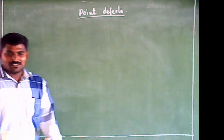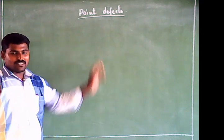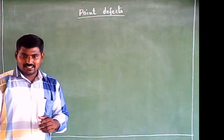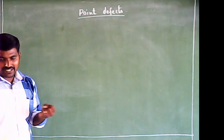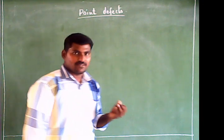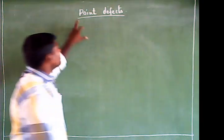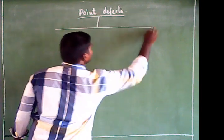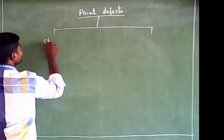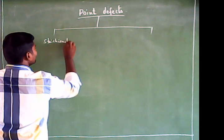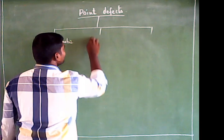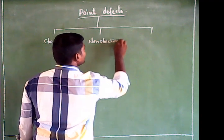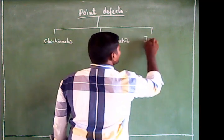Welcome students. Today we see about the topic point defects. In the previous class we discussed about imperfections in solids. In this topic we see about line defects, point defects, etc. The point defect is classified into 3 types: stoichiometric, non-stoichiometric, and impurity defects.